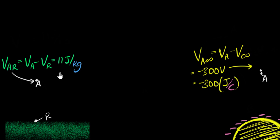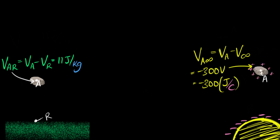So let's quickly start with something we've already seen before. In gravity, if I say potential at a point A with respect to some reference is 11 joules per kilogram, it means if I were to keep a kilogram of rock at that point, it would have 11 joules of more potential energy compared to how much it would have at the reference point — the ground. And the same thing applies here. When I say potential at point A with respect to infinity is negative 300 joules per coulomb, it basically means if I were to keep a coulomb of charge at that point, it would have 300 joules of potential energy less compared to when it is at infinity.